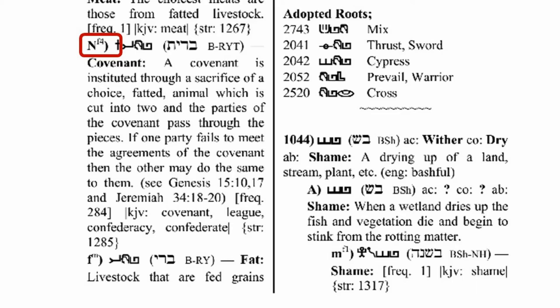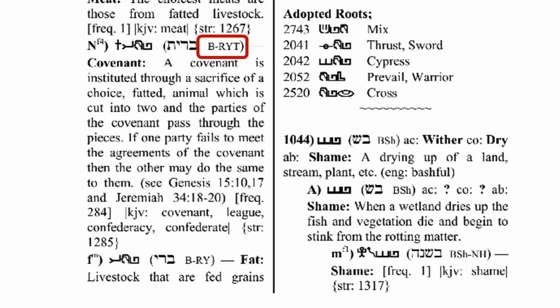It is written as NF4. The F means that it is a feminine noun. Each word entry includes the Hebrew word spelled in ancient Hebrew and modern Hebrew, and a transliteration of the Hebrew in English. This is followed by a translation of this Hebrew word, which is covenant. A covenant is instituted through a sacrifice of a choice, fatted animal, which is cut into two, and the parties of the covenant pass through the pieces. If one party fails to meet the agreements of the covenant, then the other party may do the same to them.